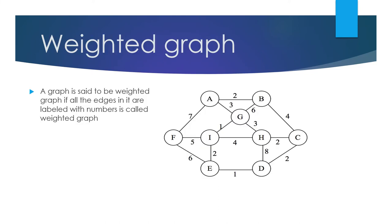Next is weighted graph. If all the edges in a graph are labeled with numbers, then it is said to be a weighted graph. Here every edge is labeled with numbers like 1, 2, 3, 4, 5, 6, 7, and 8. So this is about weighted graph.